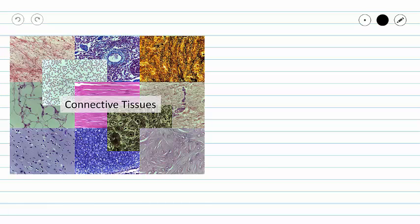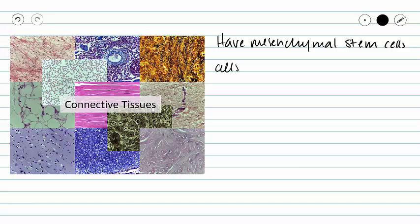Before we move on to our specifics, let's remember what unifies all of our connective tissues. First off, they all have a mesenchymal origin and so they have mesenchymal stem cells. And then all of our connective tissues are made of two major components: our cells and our extracellular matrix.